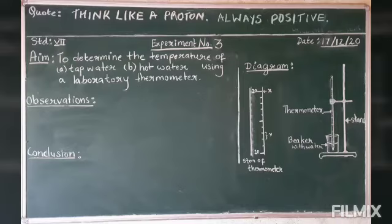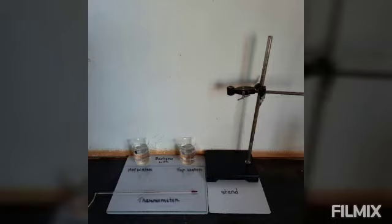Hello students, today we are going to perform experiment number three. The aim of the experiment is to determine the temperature of tap water and hot water using a laboratory thermometer. Requirements are two beakers — one with hot water and one with tap water — a thermometer, and a stand.